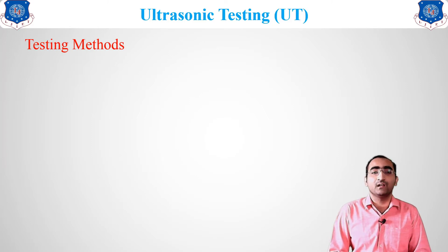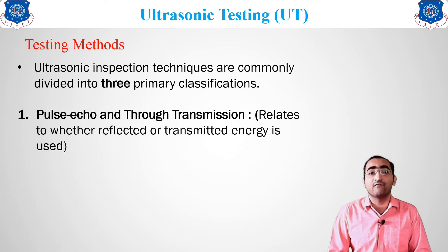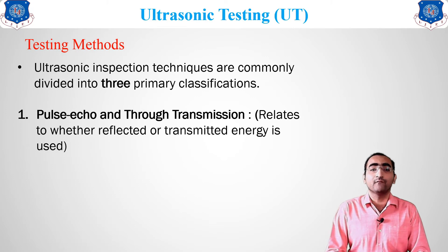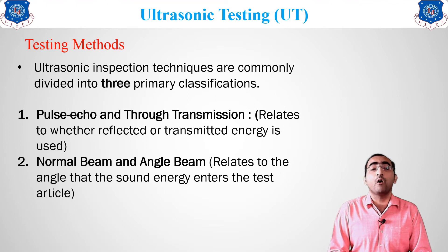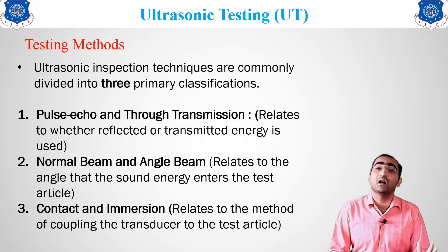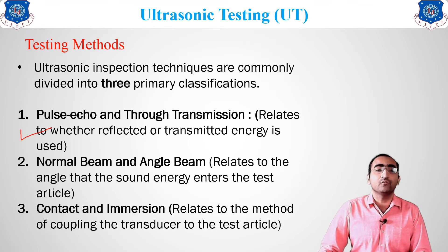There are three primary types of ultrasonic testing methods. We will discuss the first — pulse echo and through transmission method — which looks at reflected energy. The second is normal beam versus angle beam, where sound energy is introduced at certain angles. The third involves contact and immersion testing using coupling of the transducer on the test material. We will focus on the pulse echo and through transmission methods.